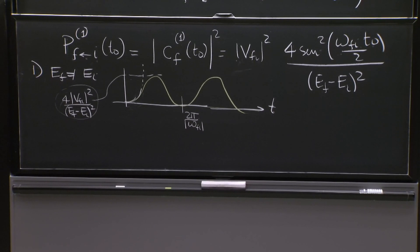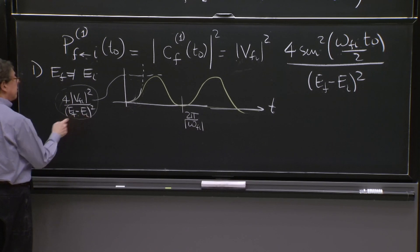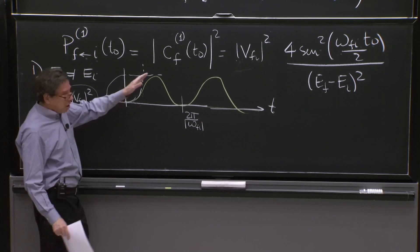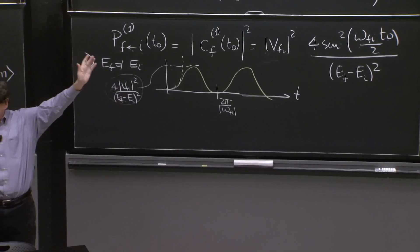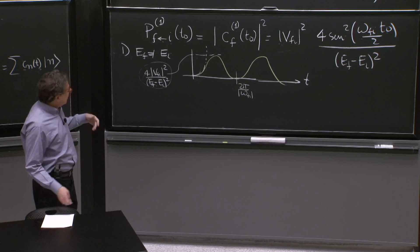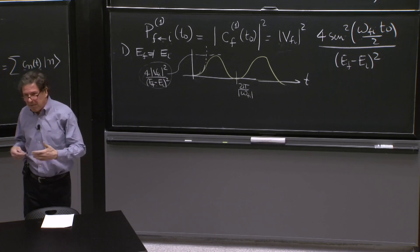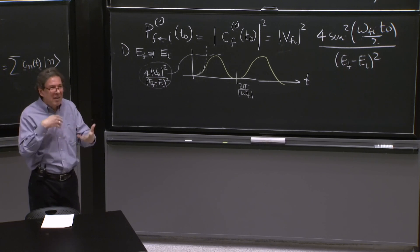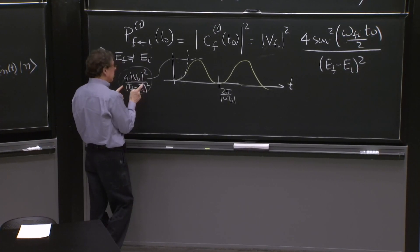This is valid for all times if this number is relatively small so that we believe perturbation theory. And that's that for that case. It's also interesting that this gets suppressed as the energy of the final state is different, more and more different, from the energy of the initial state. So it always oscillates. But if the state your transition is very far away, it's going to be extremely suppressed by the quadratic factor. So this is an important suppression.